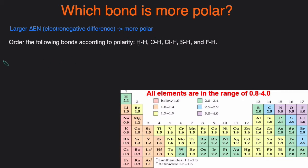Right off the bat, we know that H-H is going to be the least polar because it has a difference of 0: 2.1 minus 2.1. O and H, that's a difference of 3.5 minus 2.1 which is 1.4. Cl and H, that difference is 0.9. S and H, that difference is 0.4. And then lastly, F and H, and that difference is 1.9.